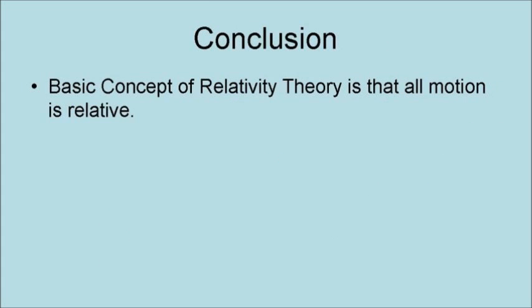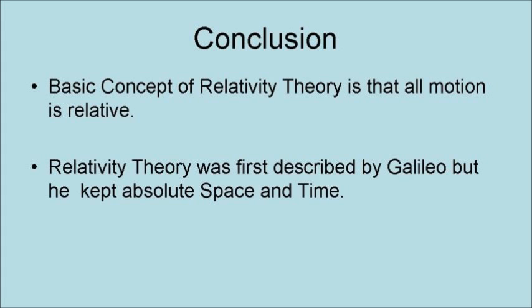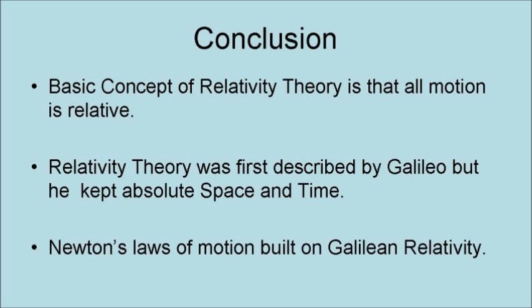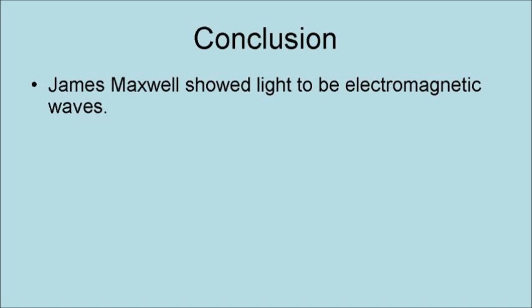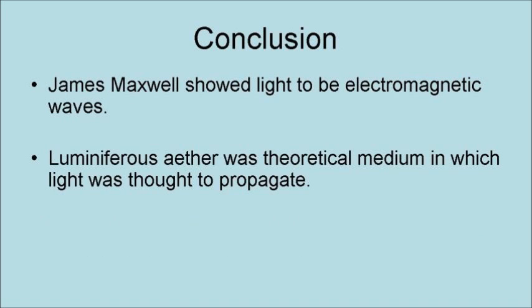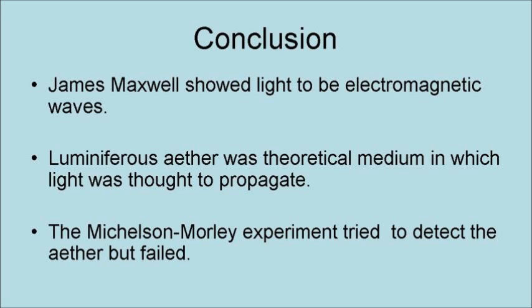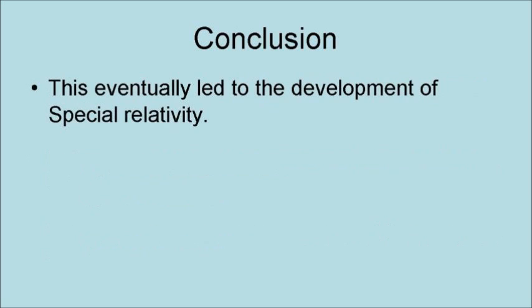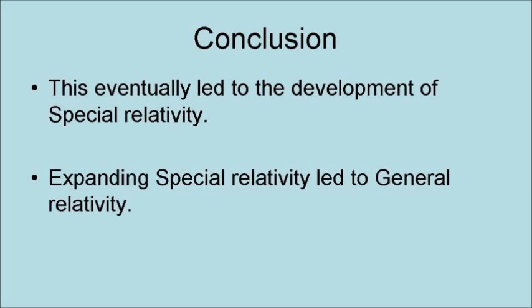The basic concept of relativity theory is that all motion is relative. Relativity theory was first described by Galileo, but he kept absolute space and time. Newton's laws of motion built on Galilean relativity. James Maxwell showed light to be electromagnetic waves. Luminiferous ether was a theoretical medium in which light was thought to propagate. The Michelson-Morley experiment tried to detect the ether, but failed. This eventually led to the development of special relativity, and expanding special relativity led to general relativity.